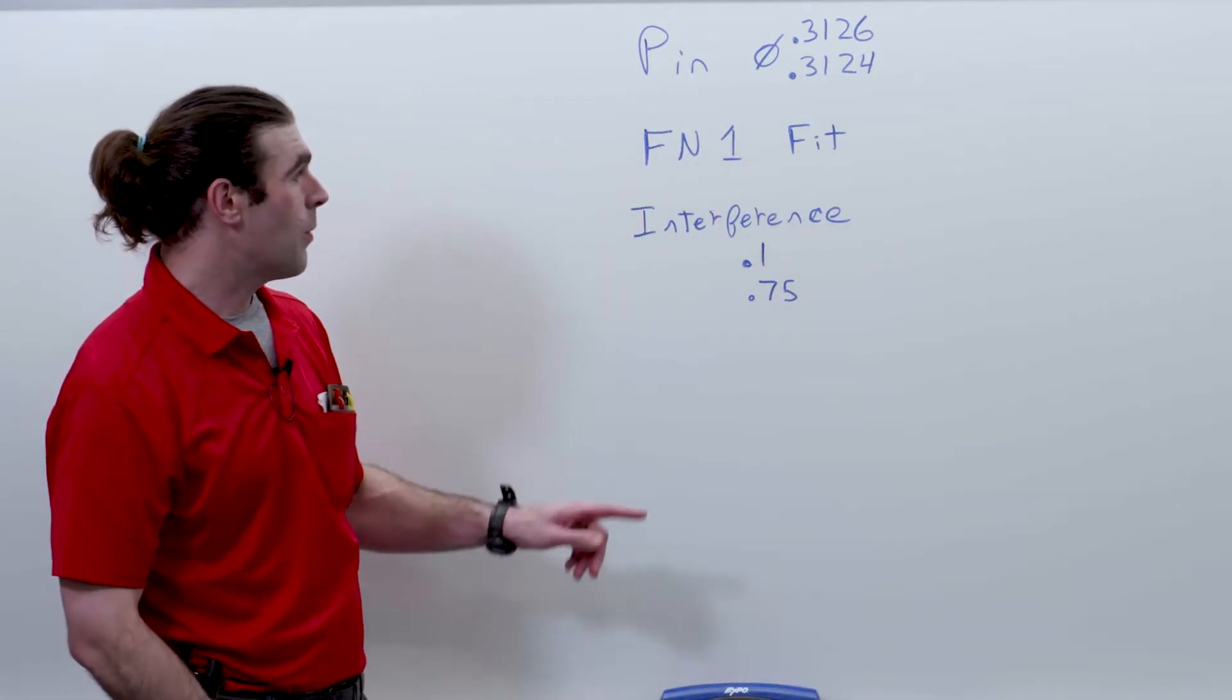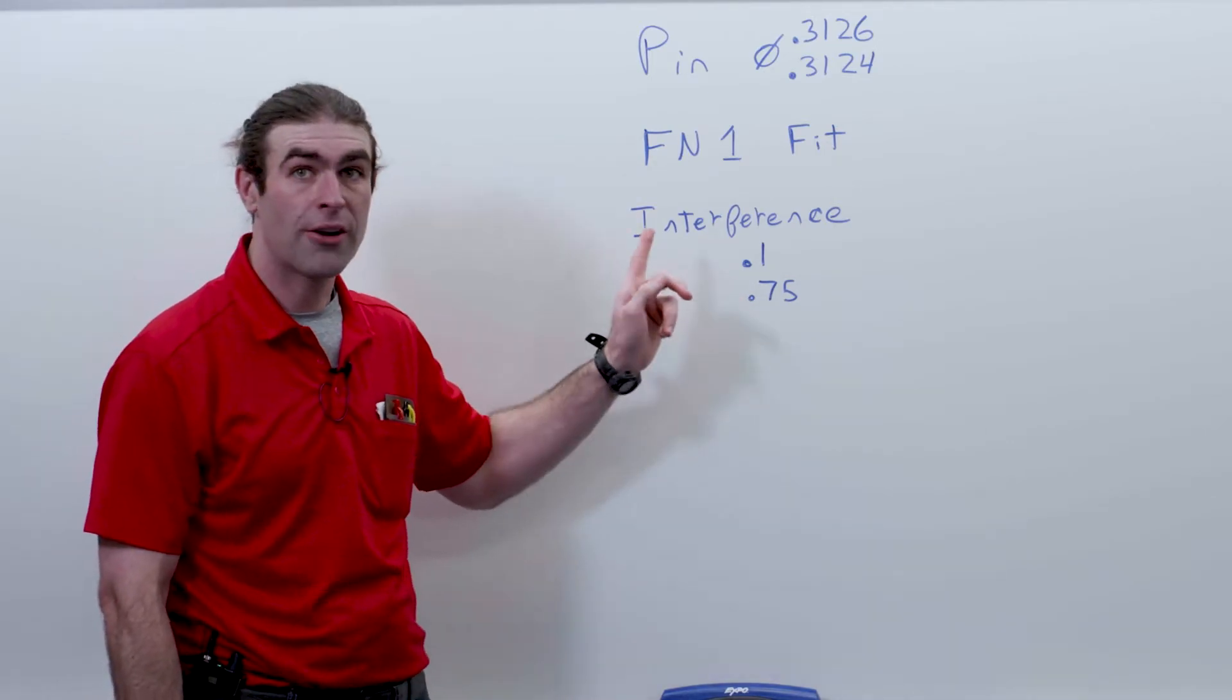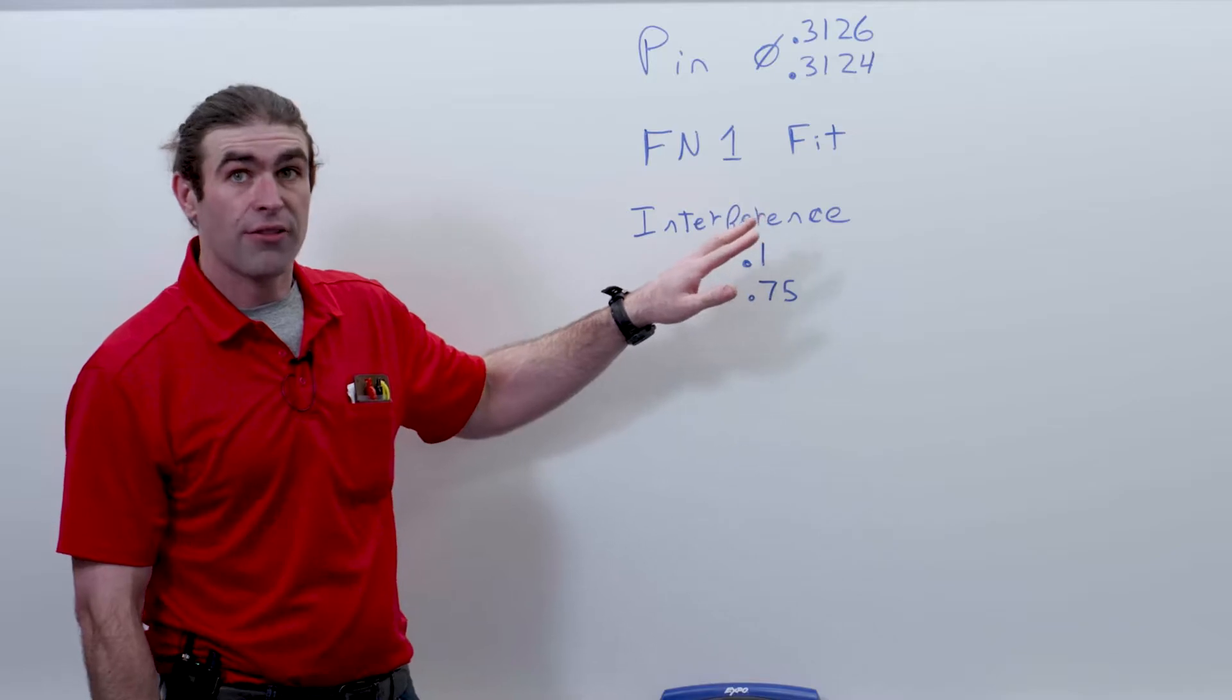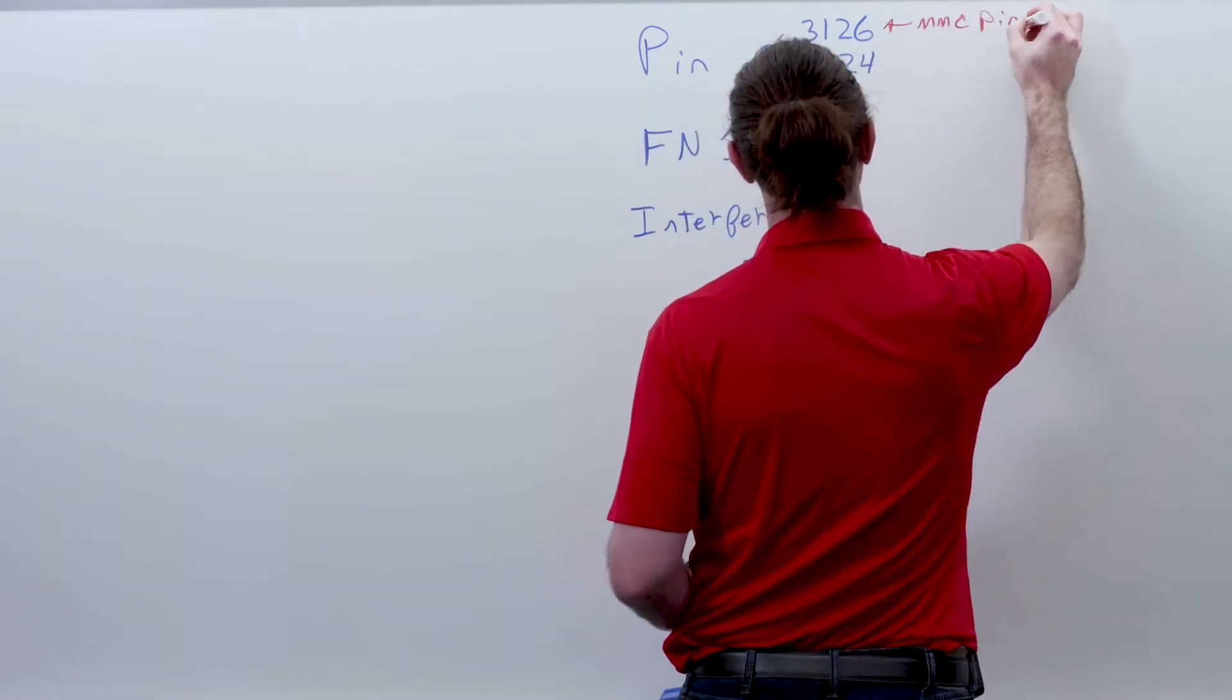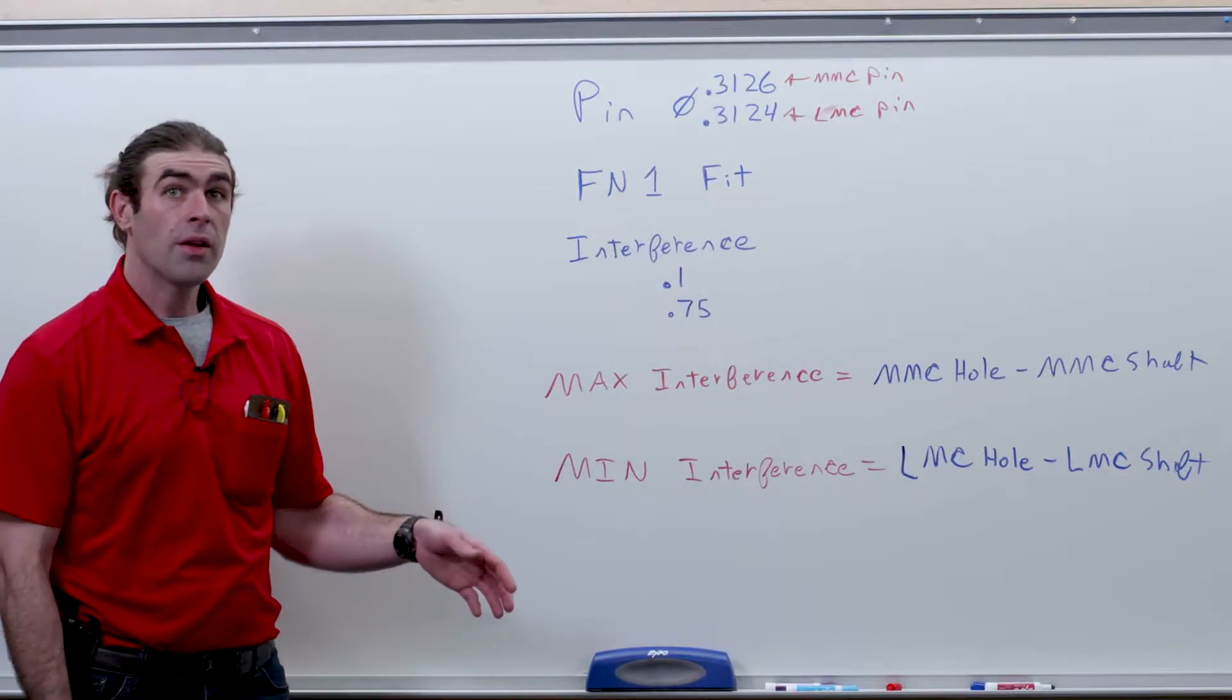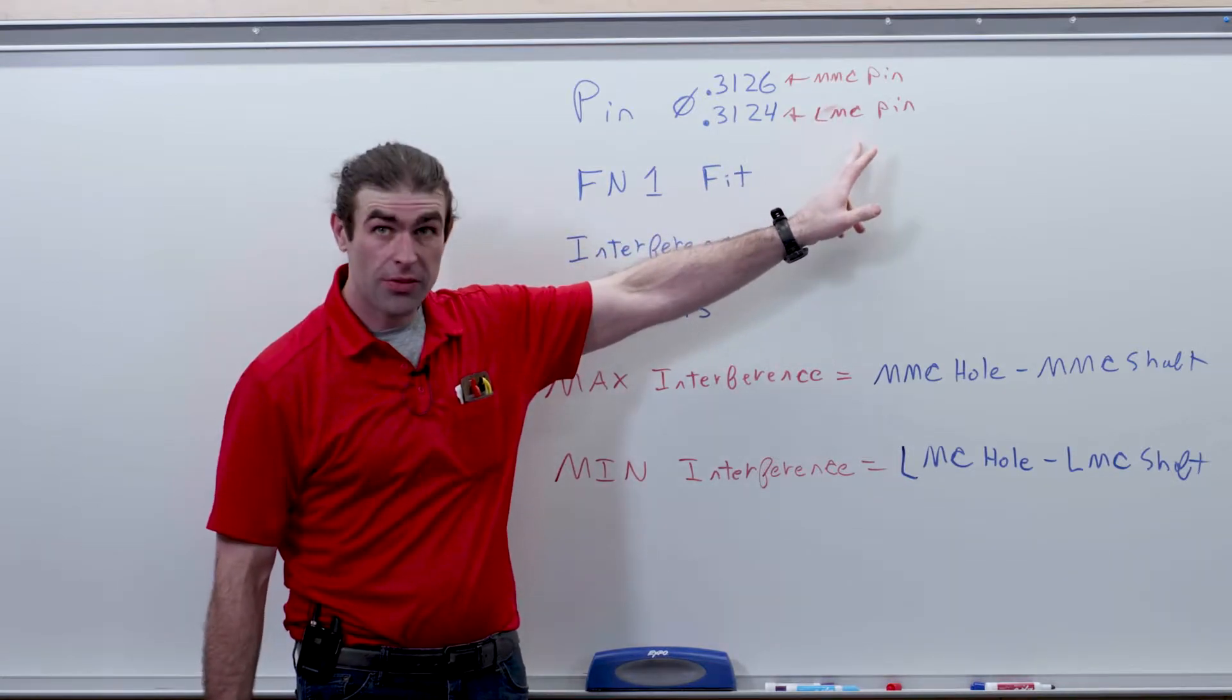All we need to know is the interference. So we've got a minimum interference of one-tenth of a thousandth and a maximum interference of seven-and-a-half-tenths of a thousandth. Now, we've already got all we need to find out what the hole should be. The reason this is all the information we need is that we already have the MMC of the pin and the LMC of the pin.